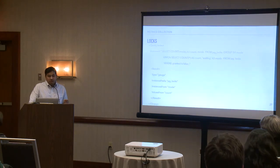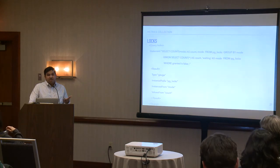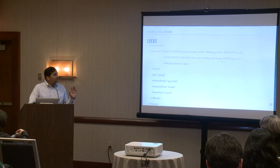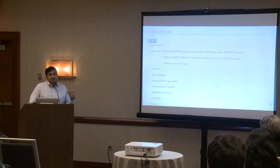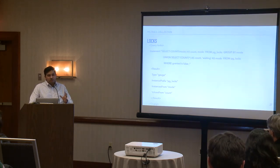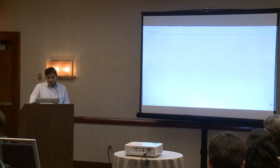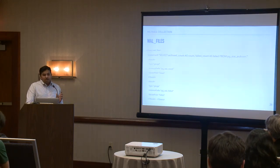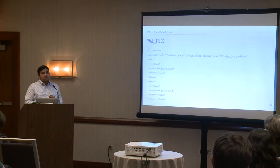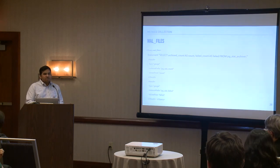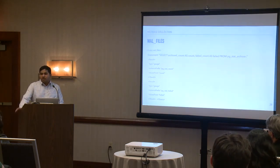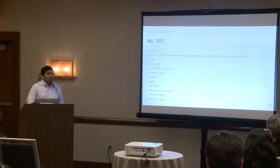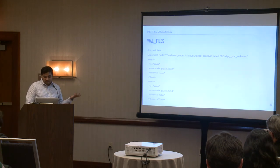Locks are another thing to monitor. Check pg_locks and look for locks where granted is false — those are waiting locks. You want to know which resources are being locked and which tables, since waiting locks are a problem. WAL archive files are also important: monitor how many files are archived versus how many failed. If your NAS or shared storage becomes unavailable, archiving will fail — I added this check after experiencing that issue, so you learn about it faster than waiting for replication lag to tell you.